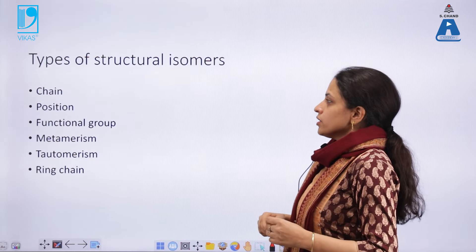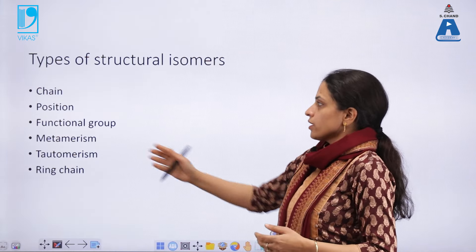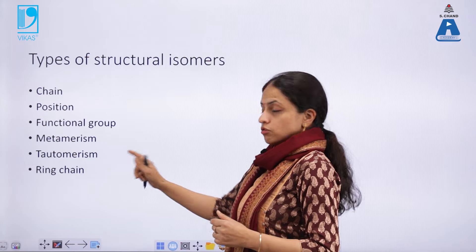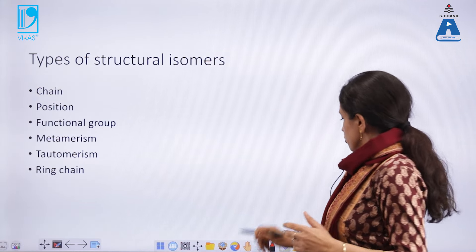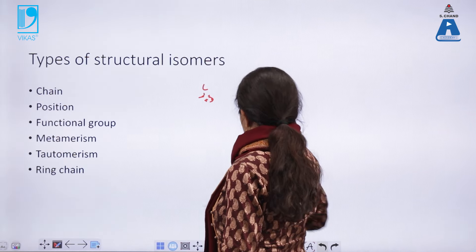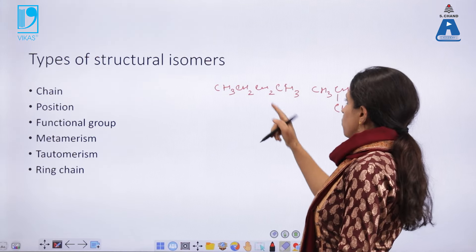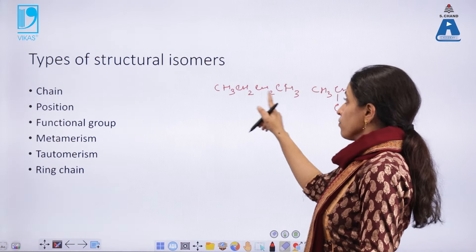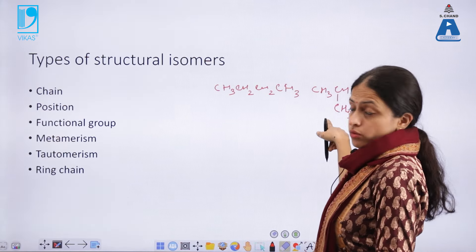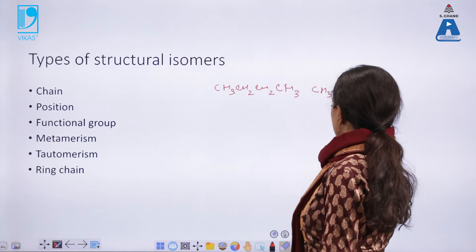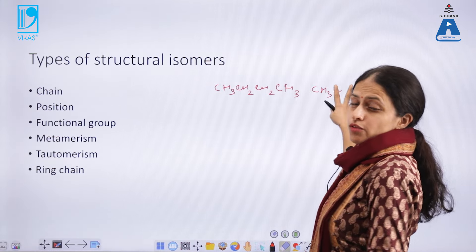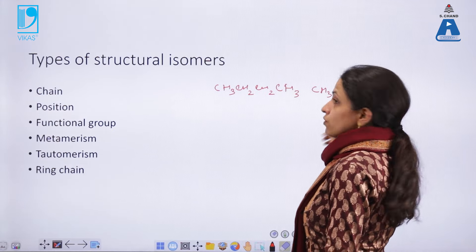Structural isomers are divided into a few categories: chain isomers, position isomers, functional group isomers, metamers, tautomers, and ring-chain isomers. Chain isomers are the ones which differ in the chain length. Here you can see two structures — one is butane and another is isobutane. Both have four carbon atoms, but in the second structure the fourth carbon atom is present as a pendant group, making it a branched structure.